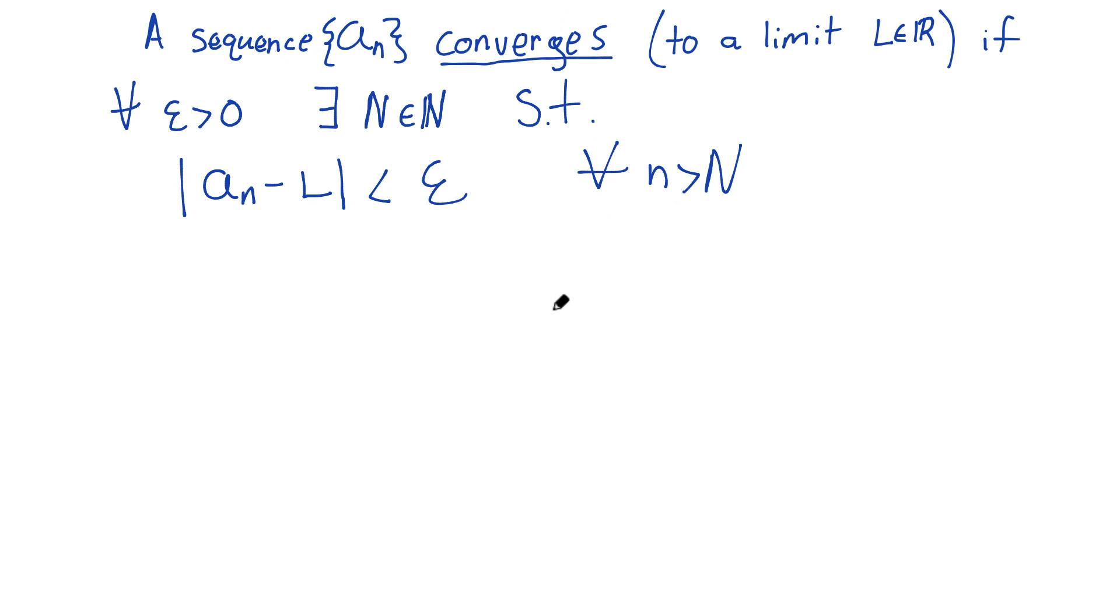This is the definition of sequence convergence. You absolutely have to know this by heart if you're taking a real analysis class. Let's break this down a little bit—no matter how small epsilon is, the difference between the sequence and its limit is going to be less than that eventually.